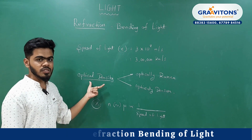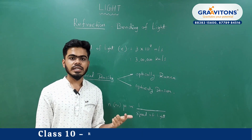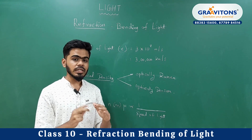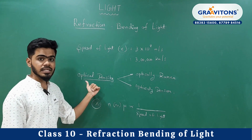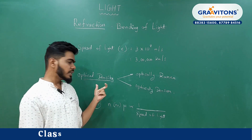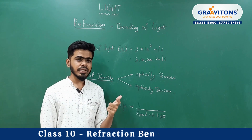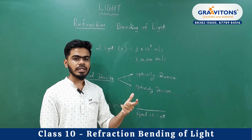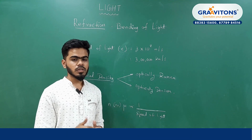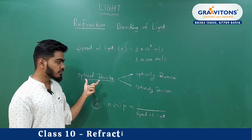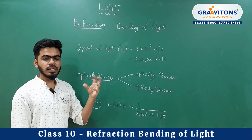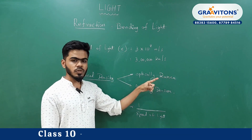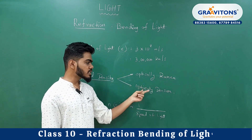Optical density is different from regular density. Regular density is mass divided by volume, but optical density is completely different. Optical density describes how much a medium absorbs or transmits light. If a medium transmits more light, it is an optically rare medium. If it absorbs more light, it is an optically denser medium.